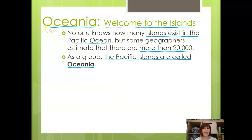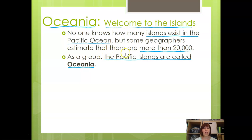Now I want to shift from Southeast Asia to Oceania. It's called Oceania because you think ocean — there are lots and lots of islands. Nobody knows exactly how many islands exist in the Pacific Ocean, but some geographers estimate there are more than 20,000 different islands. A lot of them are really tiny, and a few are very large. As a group, the Pacific islands are called Oceania.